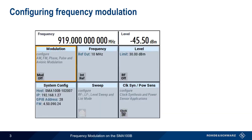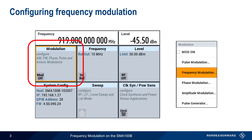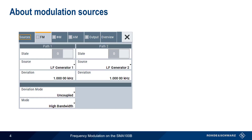To enable frequency modulation on the SMA-100B, we start by clicking on the Modulation tile and then select Frequency Modulation from the menu. Remember that modulation means varying some parameter of the transmitted carrier, so our first step is defining the modulating signal.